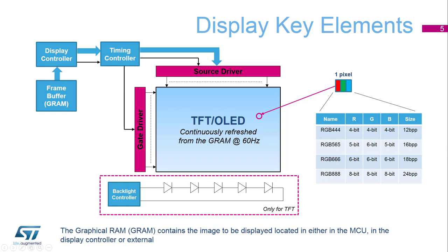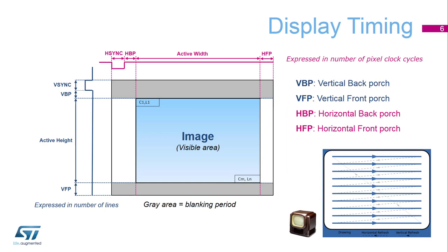Between the display controller and the timing controller, some specific signals are required. First, the pixel clock, or P-clock, is the external signal indicating the display at which rate the pixels are sent to the screen. On each pixel clock tick, one pixel data is sent. Note that all these values are expressed in a number of pixel clock cycles, so they are timing information. The V-sync, or vertical sync, is the signal that indicates the start of a new frame.